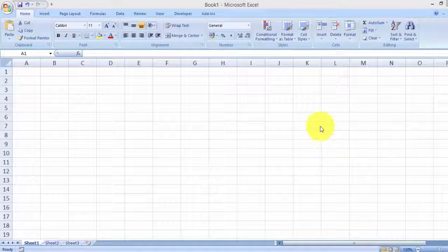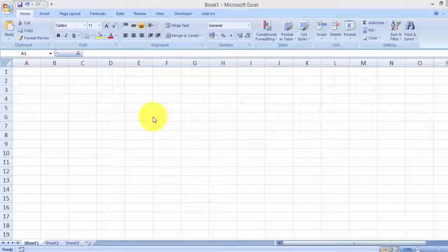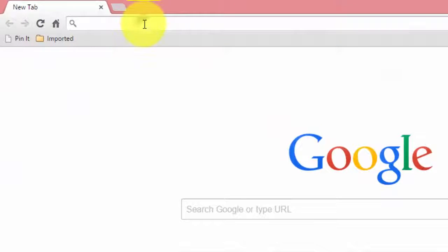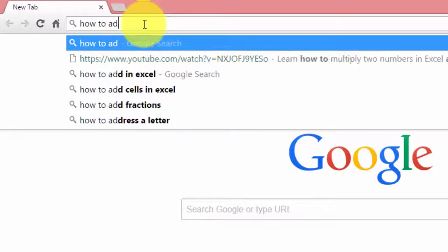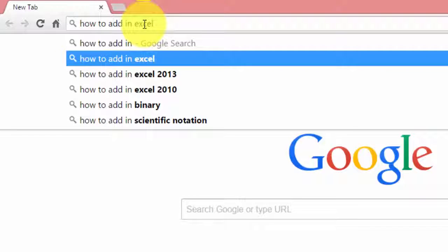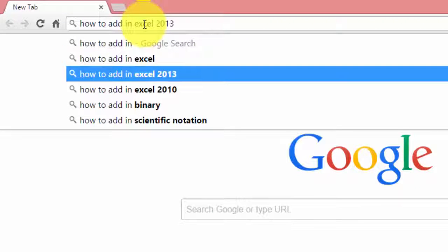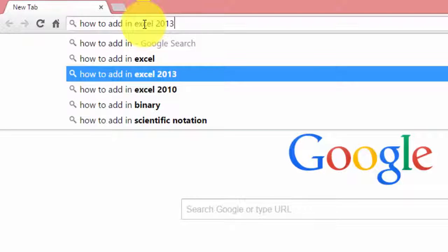Say that you want to learn how to add or make an addition to numbers in Excel. What you can do is just go to Google and type in how to add in Excel. You can also choose different versions like how to add in Excel 2010 or Excel 2013.